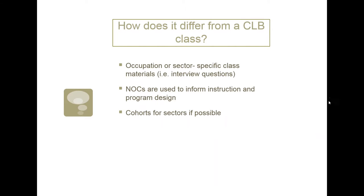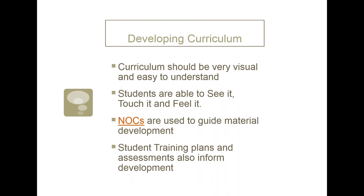A workplace language class is quite different from a regular CLB class. The primary difference is that the curriculum is based on the occupations our learners would like to obtain. We use the essential skills listed in the NOC, or National Occupation Classification, to help plan and source resources. Last January, we offered a 12-week Office Fundamentals course for learners at CLB 5 or 6 wanting to become office assistants. One student has since gone on to Northern Lights College's Office Administration program. A typical class size is about 5 students, allowing plenty of time for one-on-one support.